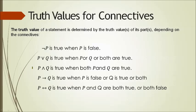The truth value of a statement is determined by the truth values of its parts depending on the connective. NOT P is true when P is false. P OR Q is true when P or Q or both are true. P AND Q is true only when both P and Q are true. The implication arrow is true when P is false or Q is true or both. The biconditional is true when P and Q are both true or both false.